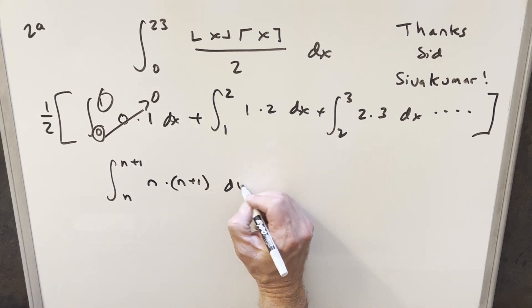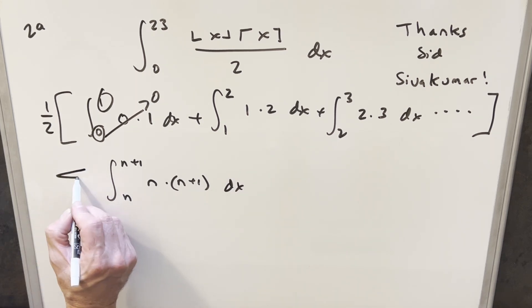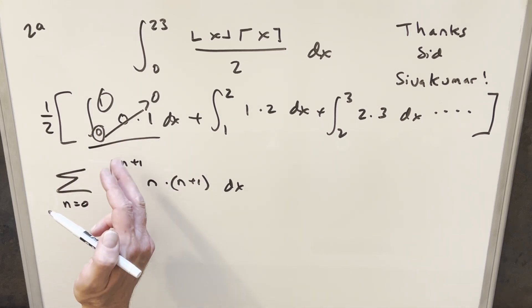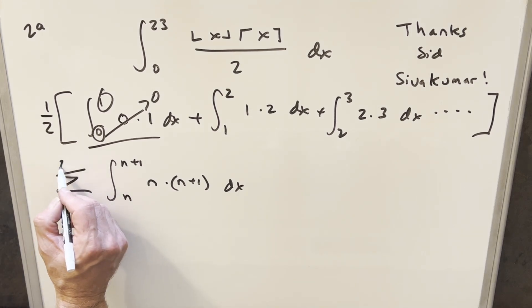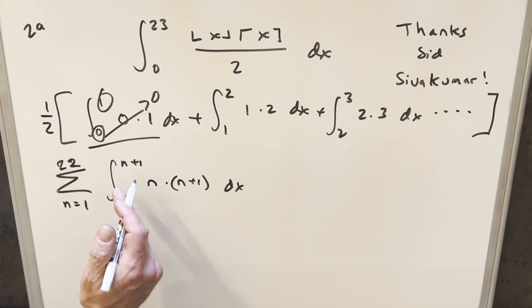And then what I can do for this is we can actually write this as a sum, because we know here we're starting at 0. But actually we already found out this first integral is going to be 0. So what I can do is actually let's just start this at 1. And then we'll go to 22. We don't want to go to 23, because you'll notice at 22, then the upper bound is going to be 22 plus 1, or 23.